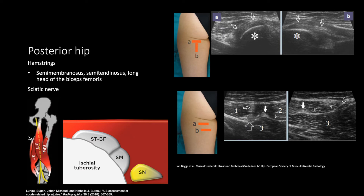At the posterior hip, we'll be examining the hamstrings and the sciatic nerve. Lay the patient flat on their belly. Find the ischial tuberosity, which is the main landmark and the attachment of the hamstring muscles. Lateral to this, you can find the sciatic nerve emerging from under the piriformis. If you shift the probe more inferiorly, you can start to distinguish between the conjoined tendon of the semitendinosus and biceps femoris and the tendon of the semimembranosus.